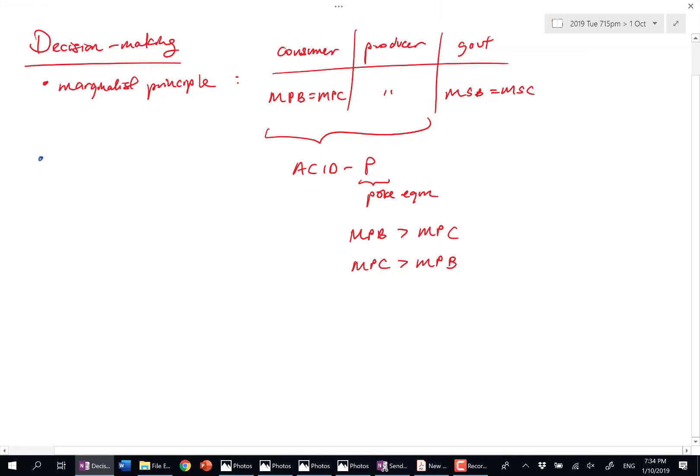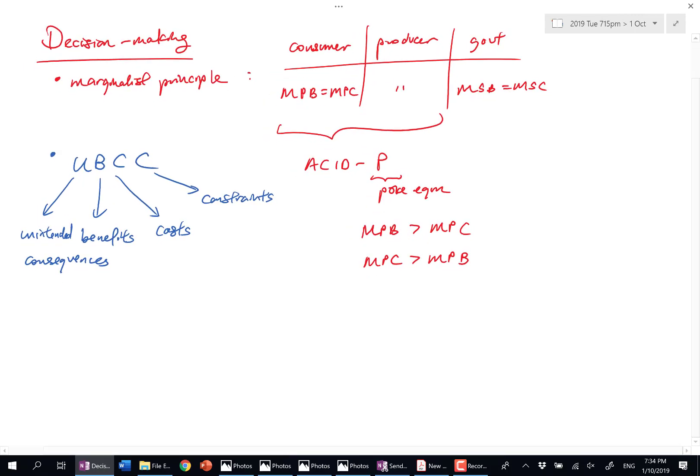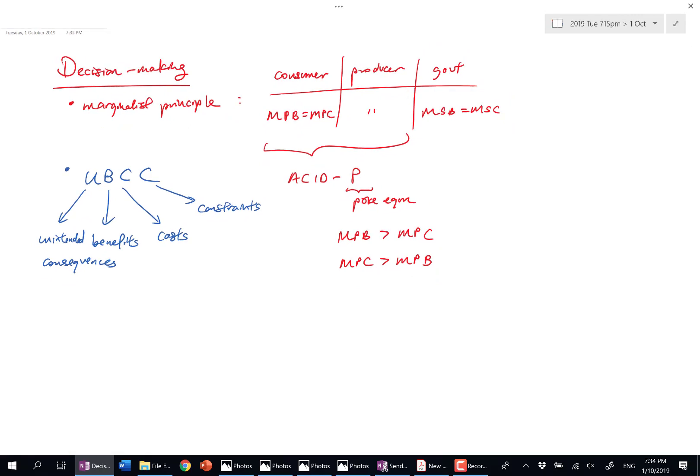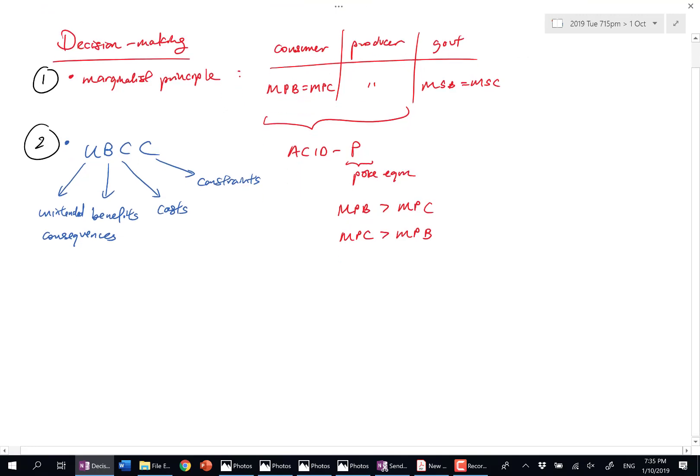There's also another aspect to decision making, UBCC. So you're probably familiar with UBCC in the sense, it's about benefits, it's about costs, it's about constraints, and finally, unintended consequences. We went through UBCC last week. If you recall, we had UBCC versus YOYO, you're on your own. There were three questions from the ACJC prelims, which involved decision making. But now, I would like to tell you what's the difference between questions on the marginalist principle and UBCC. So if I compare the two, let's say this is one, this is two. When do you use ACIDP? And when do you use UBCC?